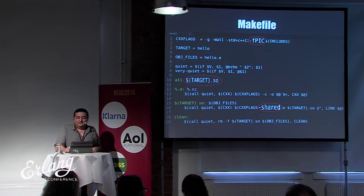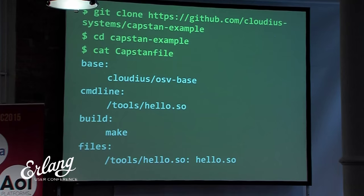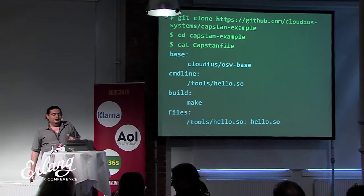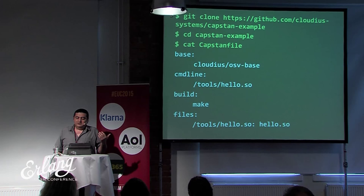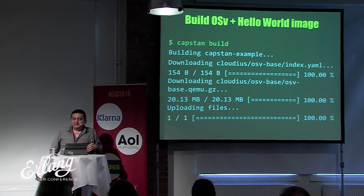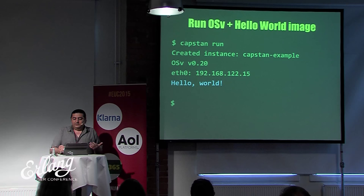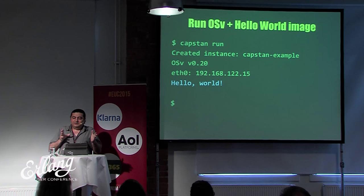For a basic hello world in C/C++: compile it as position-independent code, build a shared object, then write a Capstan file. Start with the OSV base image, run make, add the compiled output to the image, and set the entry point command line. Running `capstan build` creates the image with the hello world executable. Running `capstan run` launches a VM with the OSV image — an operating system kernel linked with the hello world printf.